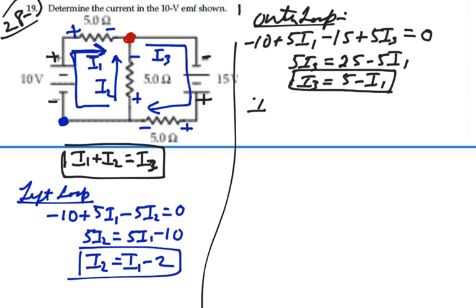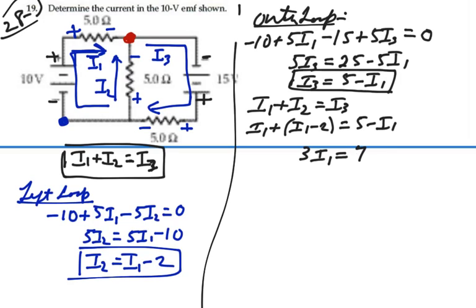I know that I1 plus I2 equals I3. So we have I1 plus I2, which is I1 minus 2, is equal to I3, which is 5 minus I1. So I have that 3I1 is equal to 5 plus 2, or 7.